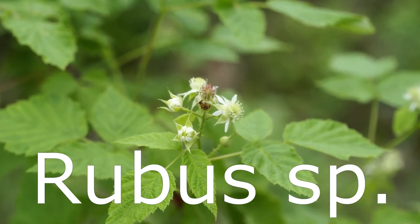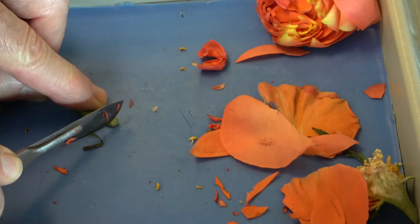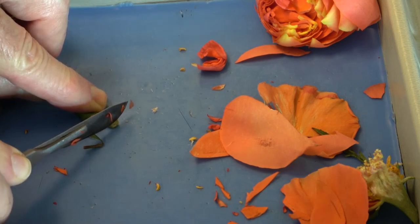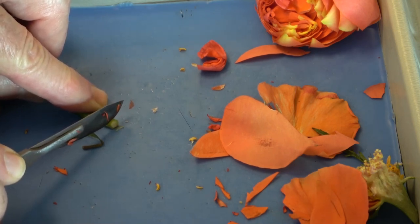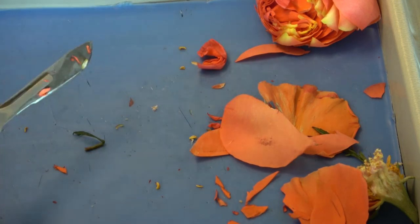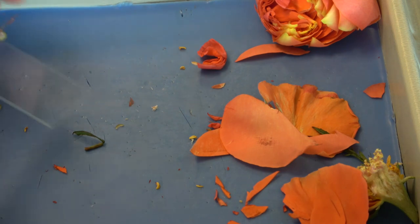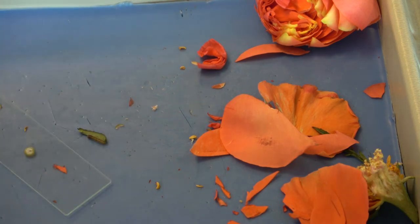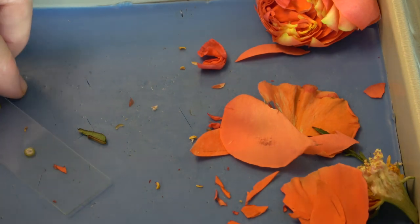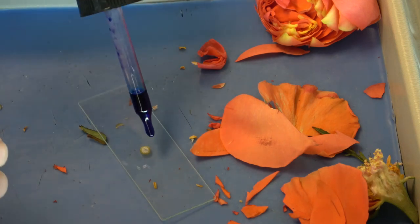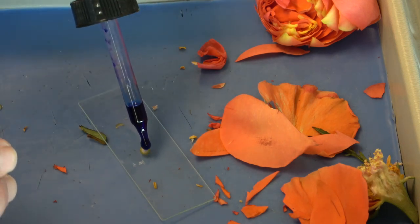Eudicot vascular arrangements are also noticeably different from the monocot vascular arrangements. In eudicot stems, the bundles of vascular xylem and phloem are arranged in a circular pattern, just below the dermal tissue. If we take a thin cross section of the stem and add stain, the arrangement of vascular bundles should come into view under a microscope.